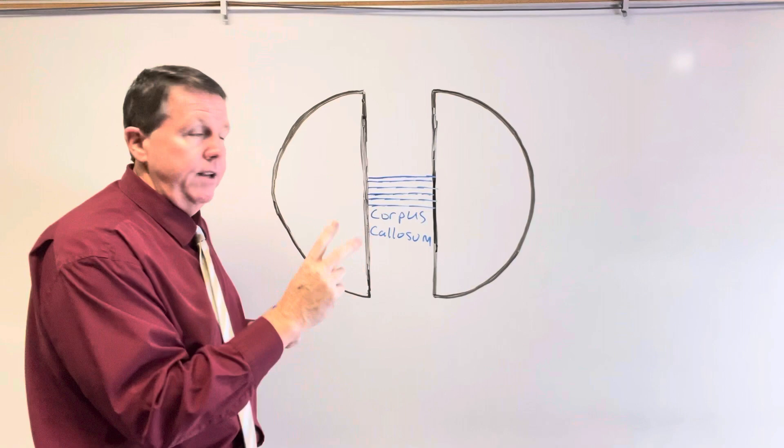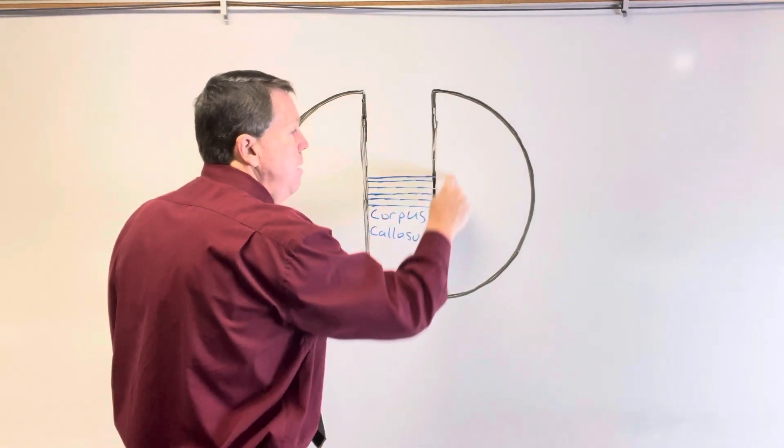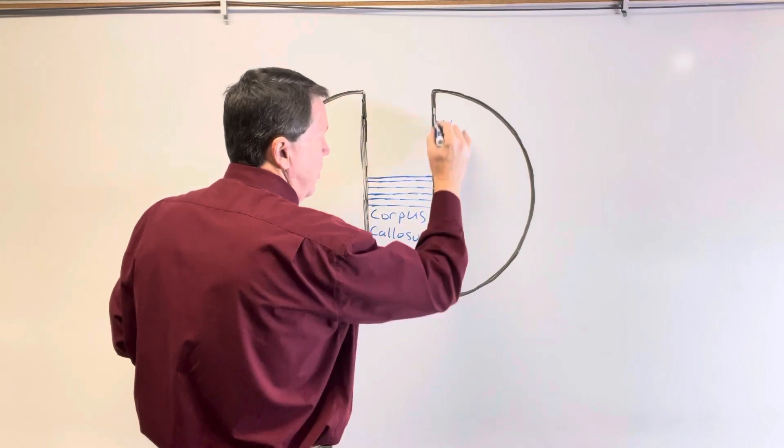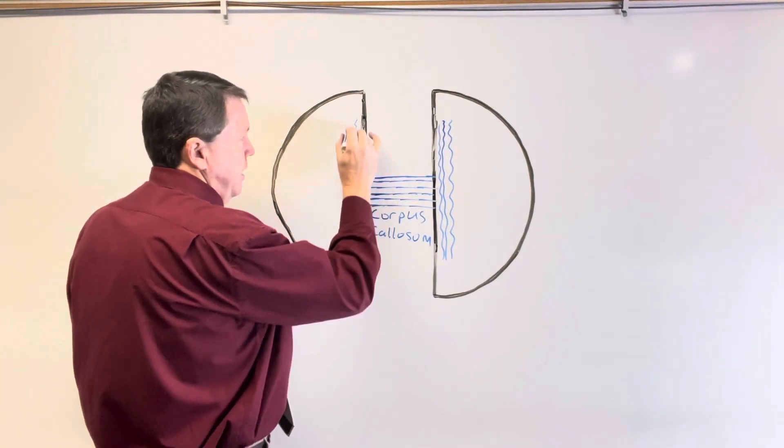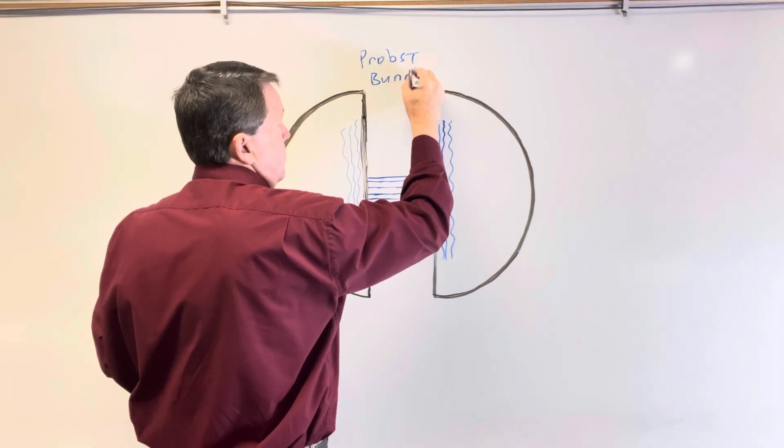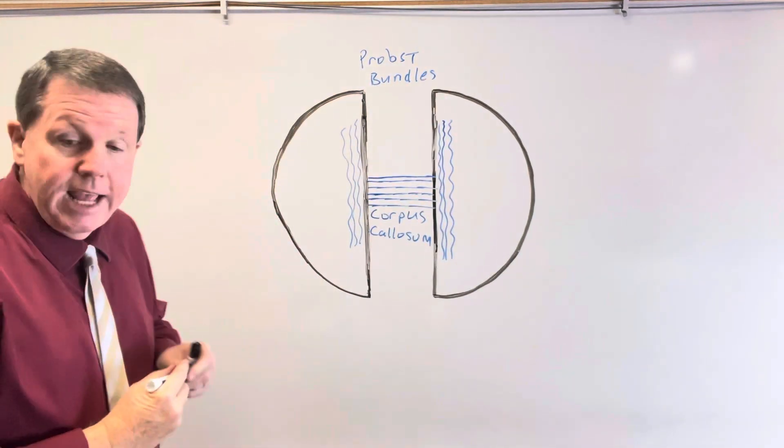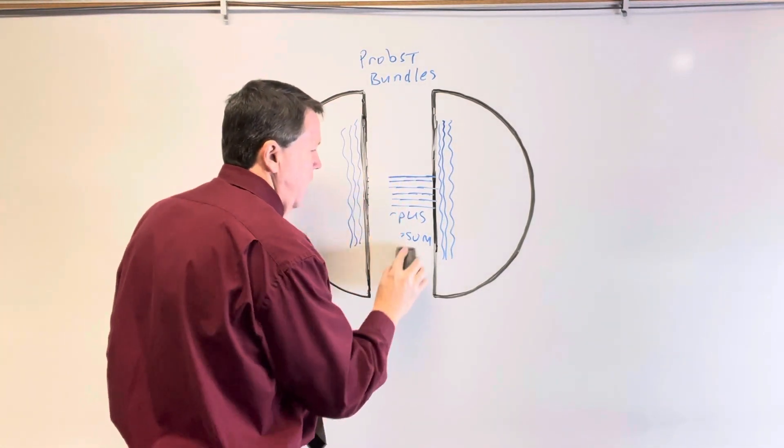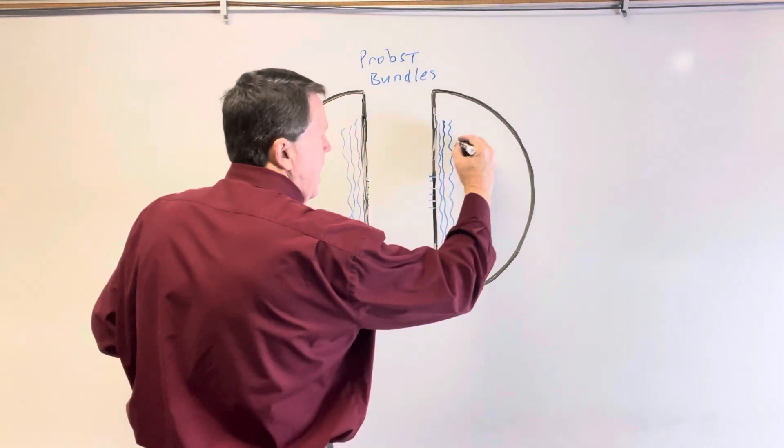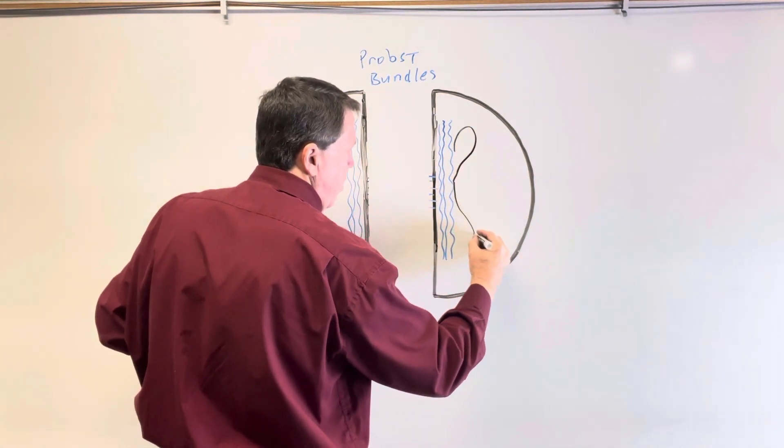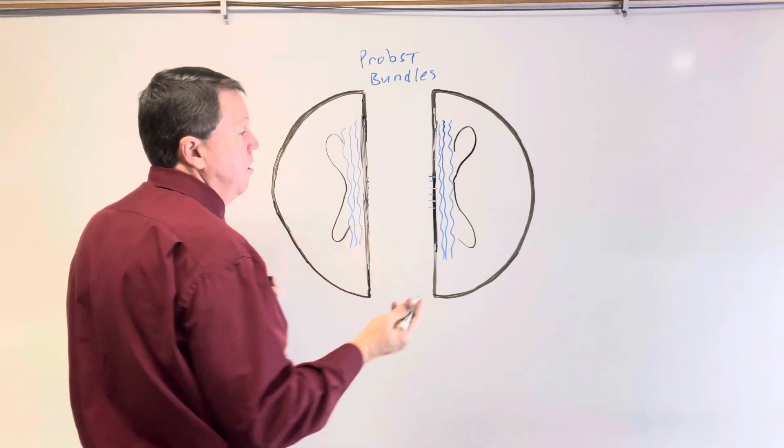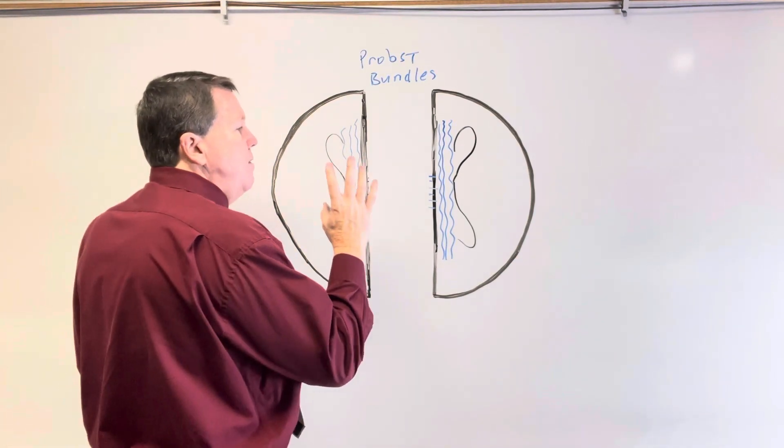So now, two things that can happen in this. One is, instead of these forming back and forth like this, they may form longitudinally, along the walls on the inside of this hemisphere here. And when they do this, we're going to call these Probst bundles. So now, we're not going to have the communication there. What the Probst bundles can actually do is they can actually cause enlargement and widening of the ventricles that are in here. And it looks kind of like a race car. When you look at it on an MRI or a CAT scan, they actually call this the race car sign.